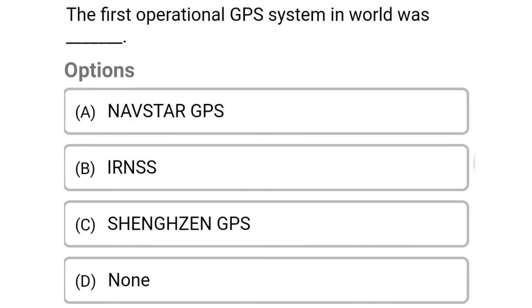So next question: the first operational GPS system in the world was — Option A: NAVSTAR GPS. Option B: IRNSS. Option C: Sengen GPS. Option D: none of the above. So the correct answer is Option A, NAVSTAR GPS.